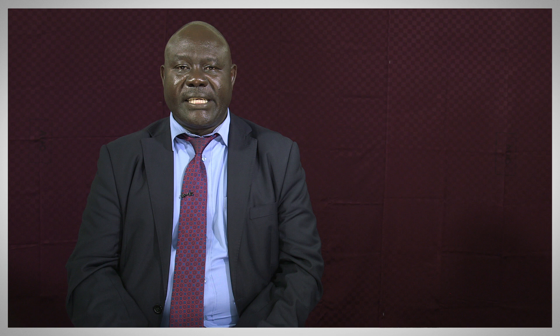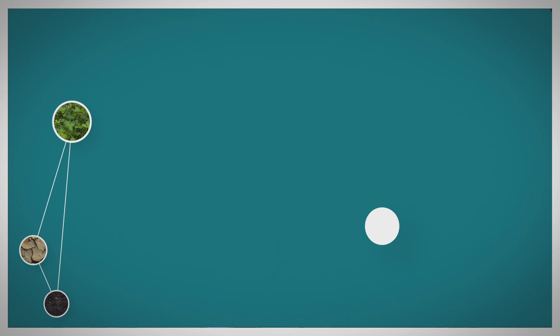It is after the regional consultations that the document will be returned to the ministry for final touch-up. A cabinet memo will be prepared and it is taken to cabinet. Once the cabinet looks at it and approves it, if there are institutional changes needed, a bill will be developed. If there are no institutional requirements, it will become a sessional paper and will be taken to parliament straight away. That is how far the National Agricultural Soil Management Policy has gone so far.